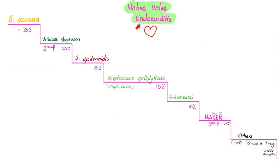Let's talk about native valve endocarditis causes. Staph aureus is the most common at 35%. Viridans group of streptococci is second most common at 25%. Then Staph epidermidis at less than 15%. Streptococcus gallolyticus, formerly known as Streptococcus bovis, is about 15%. Enterococci account for 10%. The gram-negative HACEK group is less than 5%. Others include Coxiella, Bartonella, Candida, and Aspergillus.